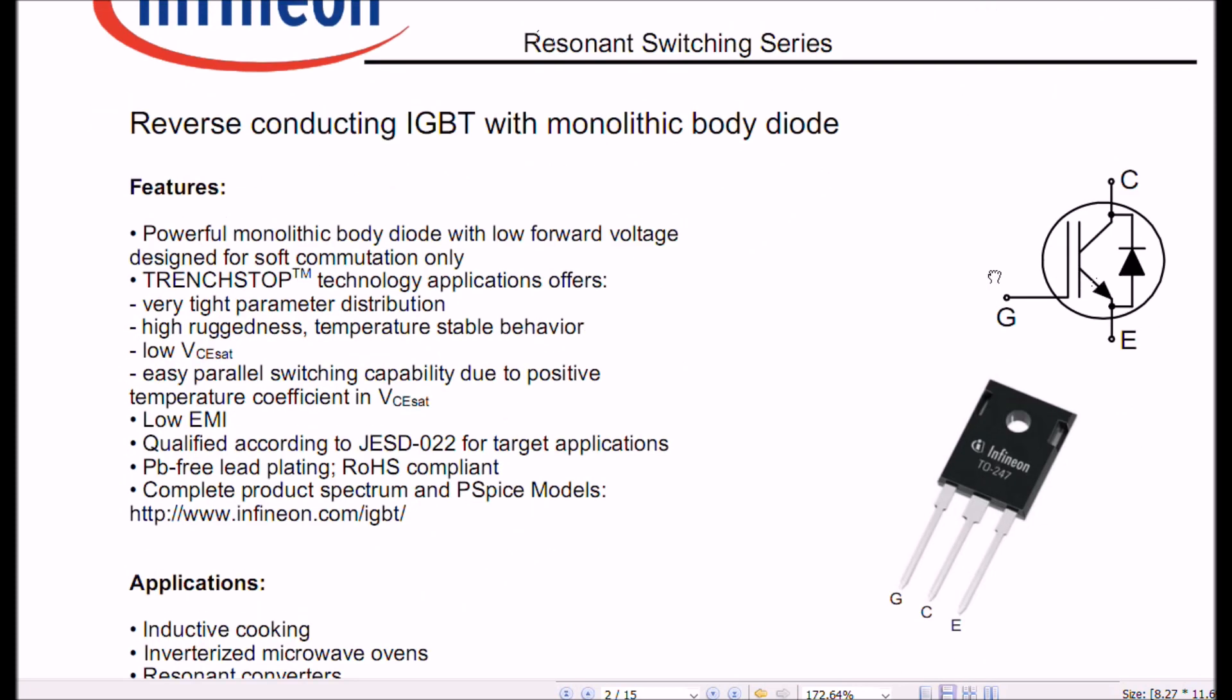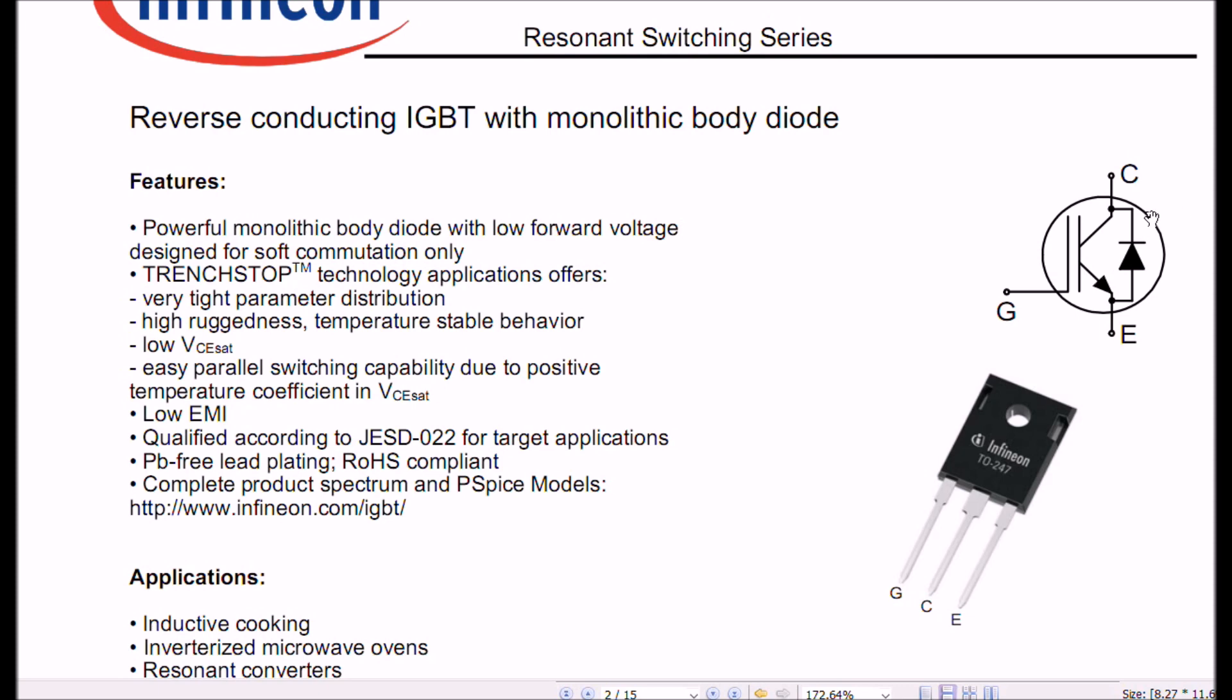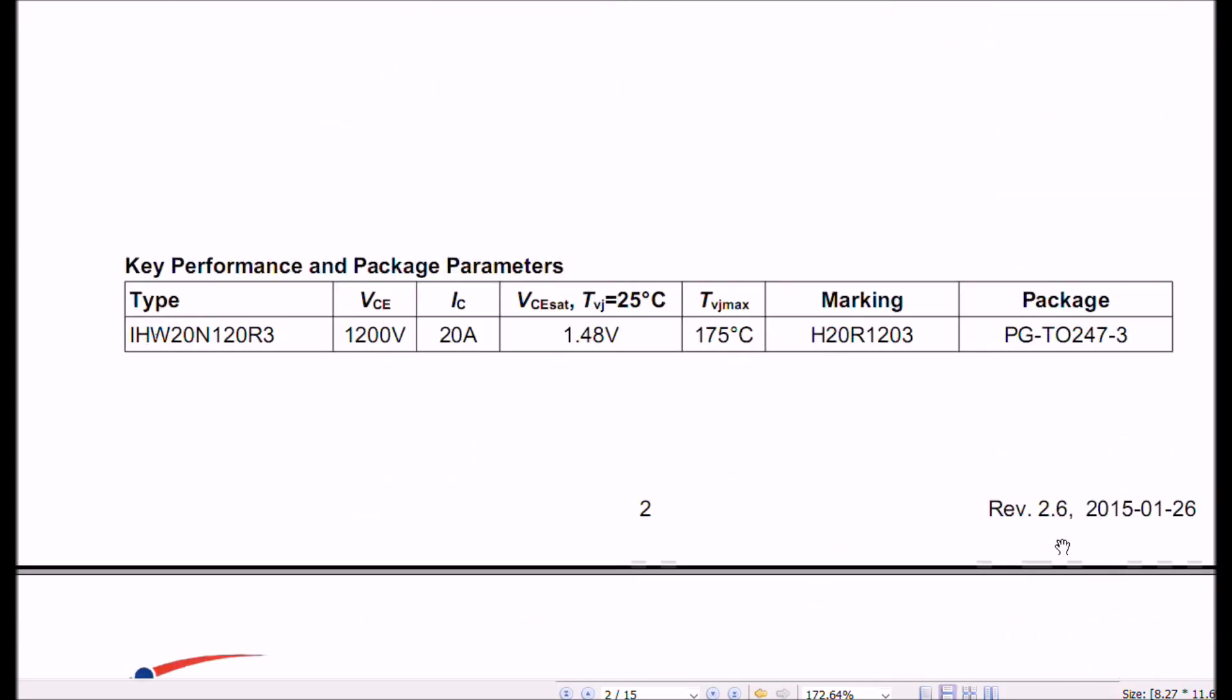It, of course, has an internal damper diode. As you can see here, hopefully it's not cut off the picture. Here is your case style. Again, this is made to be heat-synced. What are my characteristics? 1200 volts at 20 amps and a VCE sat at 25 degrees Celsius of 1.48 volts. Nice item. So, that's our theory and that's what's available. What can we use them for? Let's look at that next.